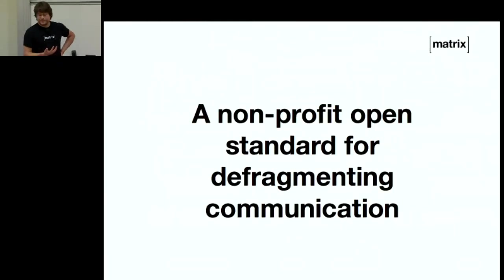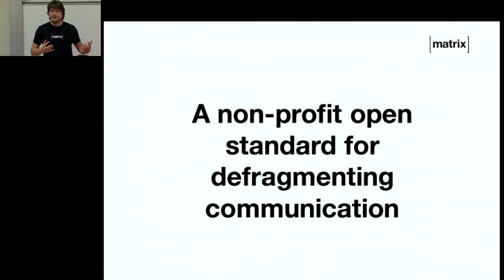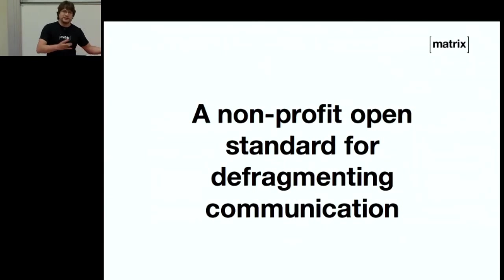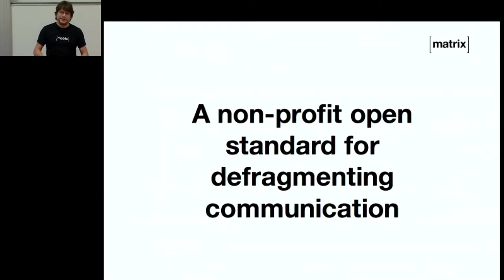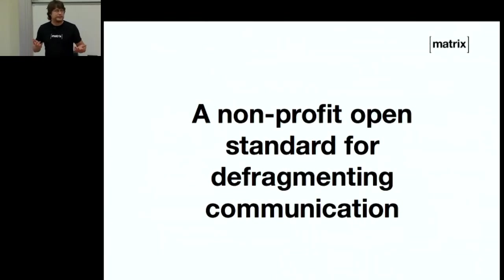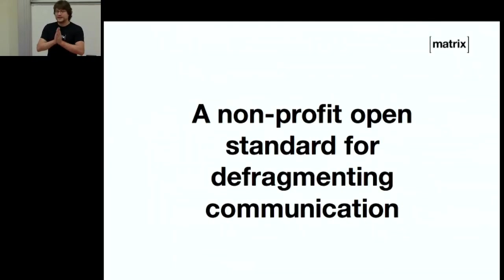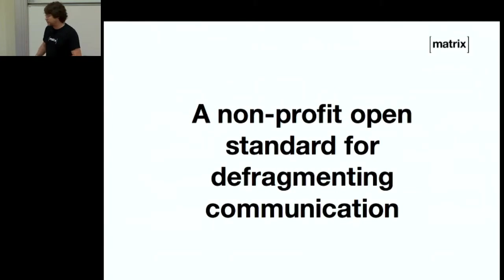Matrix is a non-profit open standard for defragmenting communication. I'm sure we're all familiar with the way online communication has ended up trapped in silos inside walled gardens. Typical users aren't using XMPP or Matrix — they're using WhatsApp and Facebook and Gitter and Slack and all of these different silos. Matrix basically exists to try to fix the fragmentation problem. This is our last chance to try to have interoperable open communication on the internet.